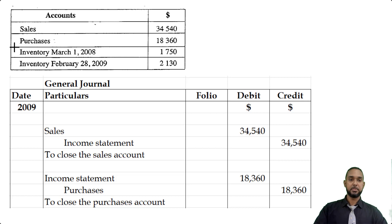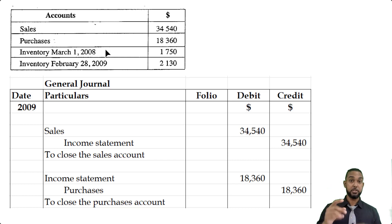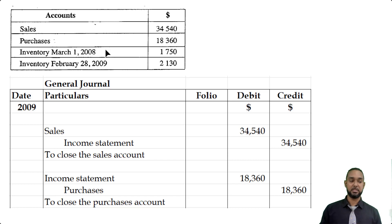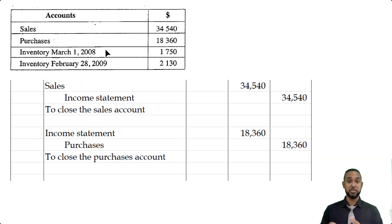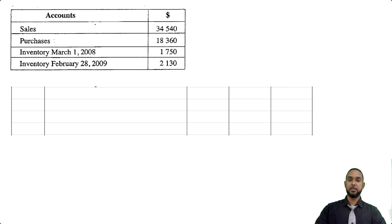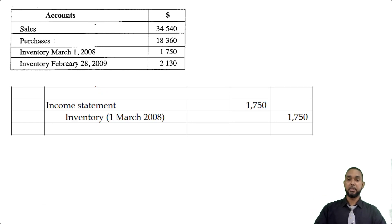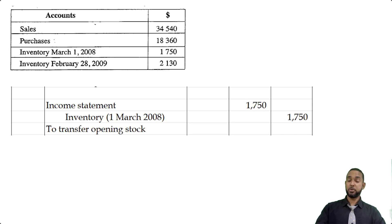The next item is opening stock. Opening stock is an asset, but in the calculation of cost of goods sold it's combined with purchases — opening stock plus purchases gives cost of goods available. So you can consider it like an expense because it has a debit balance. To transfer a debit balance out of an account, you credit that account and debit where you're sending it. So: debit the income statement (or trading account) and credit inventory — March 1st 2008 — to transfer opening stock.